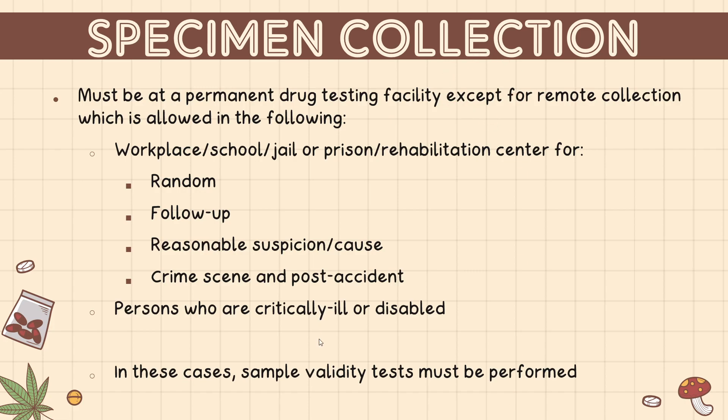A specimen could be collected outside the facility in a workplace, school, jail, or prison rehabilitation center for random checking. Random checking of urine samples is very important because if an individual is told they will be tested for drug screening, sometimes they will try their best to prepare so that their test would be negative. Random testing is the most effective way to check if an individual is really using illegal drugs.